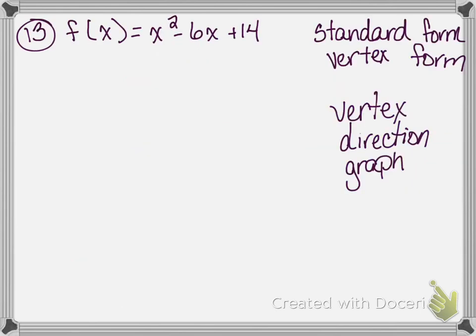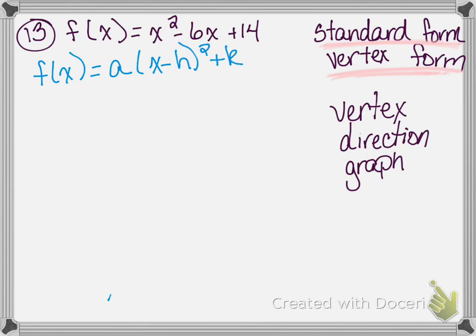Number 13 says: put f of x equals x squared minus 6x plus 14 in standard form, then state the vertex and the direction of the parabola, and finally graph the parabola. Vertex form is f of x equals a times x minus h squared plus k, where h and k is the vertex of the parabola. The way we do this is we complete the square.